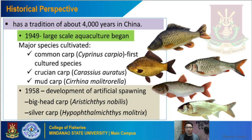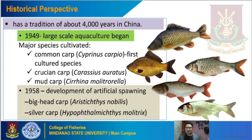Another type of carp cultivated in China was the crucian carp, Carassius auratus, and the mud carp, Cirrhinus molitorella. In 1958, there was already development of artificial spawning of carp species, including the bighead carp, Aristichthys nobilis, and the silver carp, Hypophthalmichthys molitrix — which were artificially spawned under controlled conditions. Take note of the scientific names as you will encounter them in the Google Form post-test.